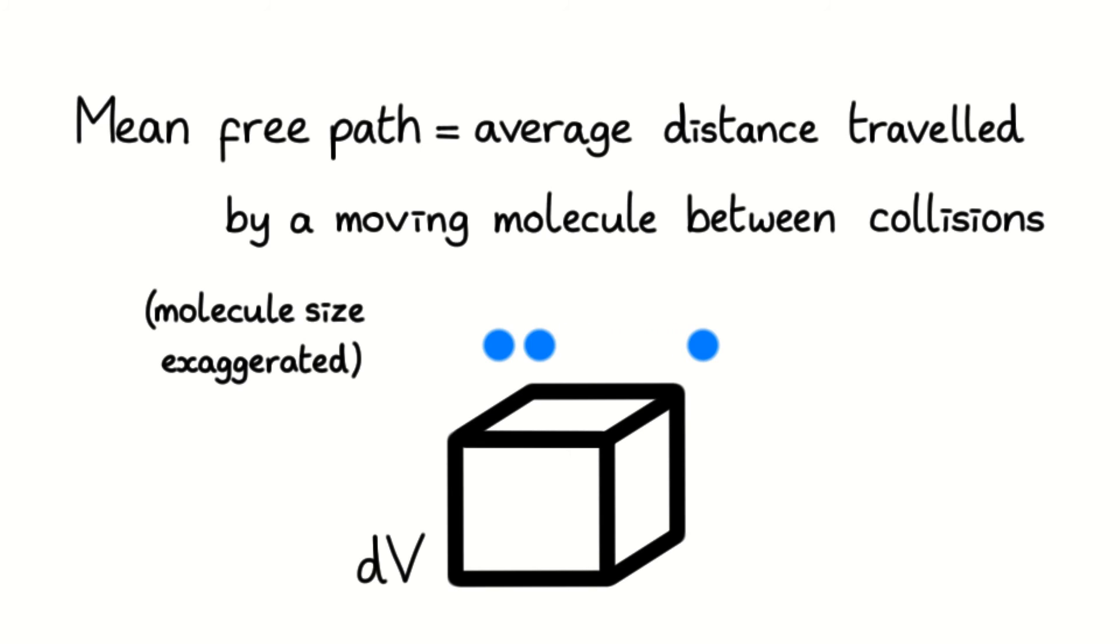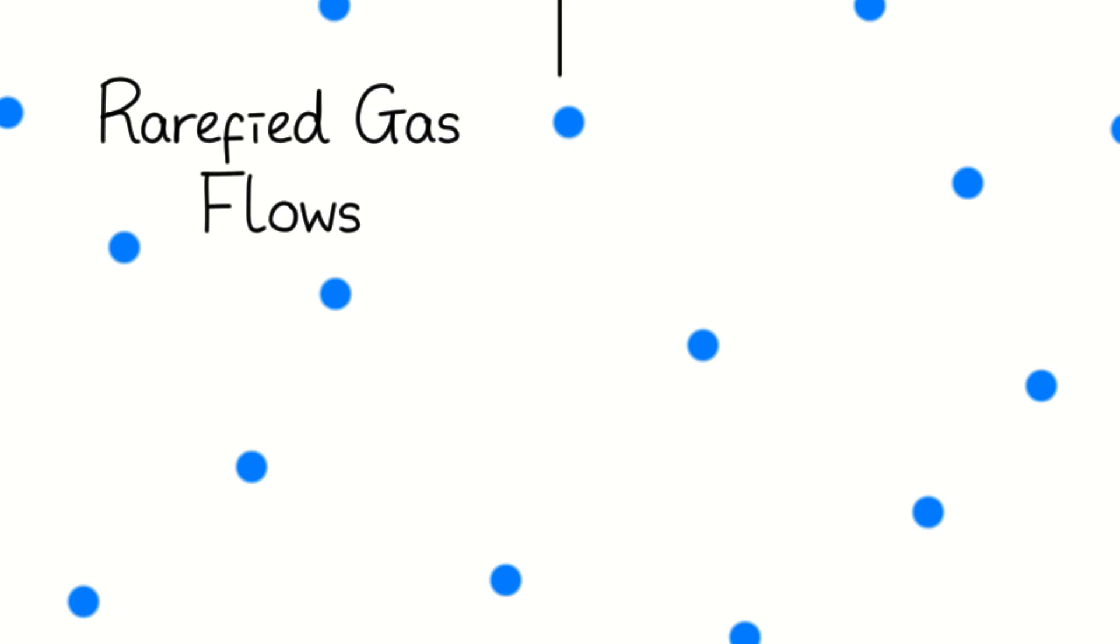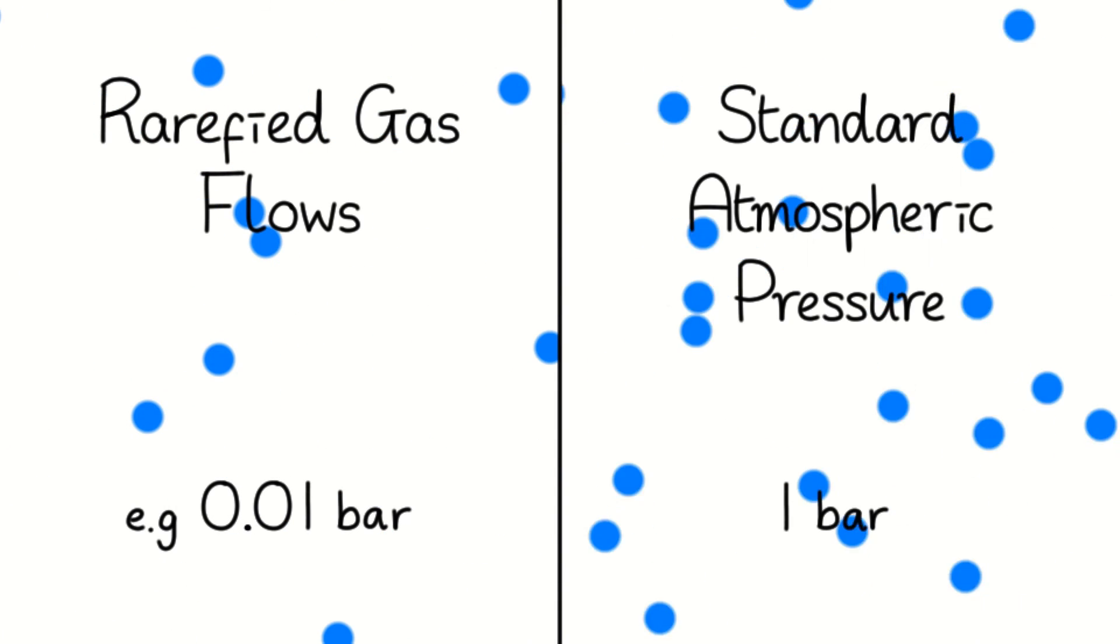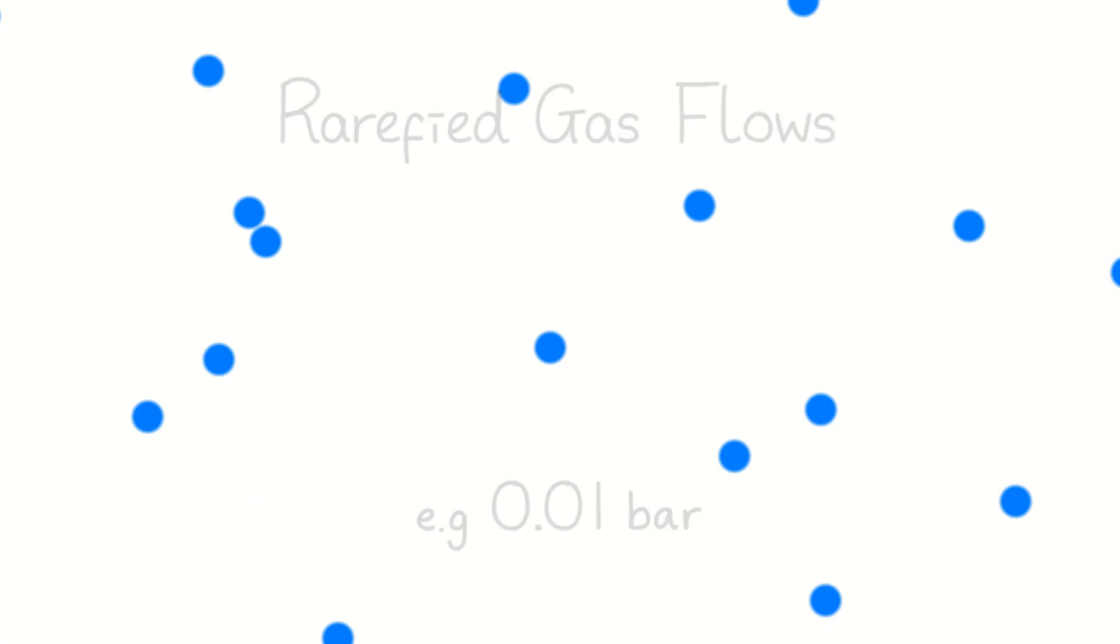Essentially, this means the movement of individual molecules becomes significant at a bigger scale. An example of where this occurs is in rarefied gas flows. These are gases that have large average spacings between its molecules. This results in pressures that are significantly lower than standard atmospheric pressure. An example of such gases is air in the Earth's upper atmosphere.